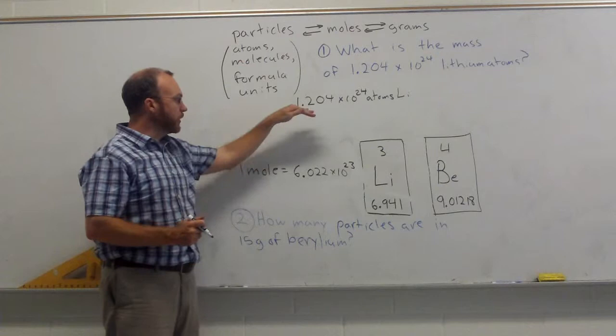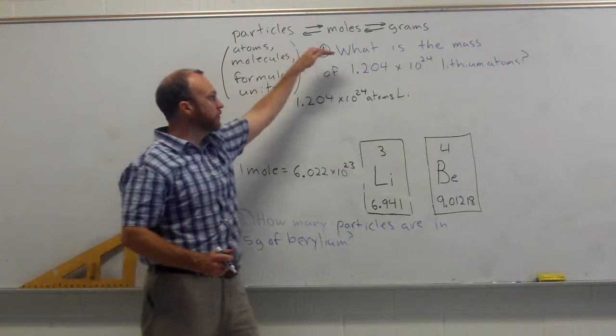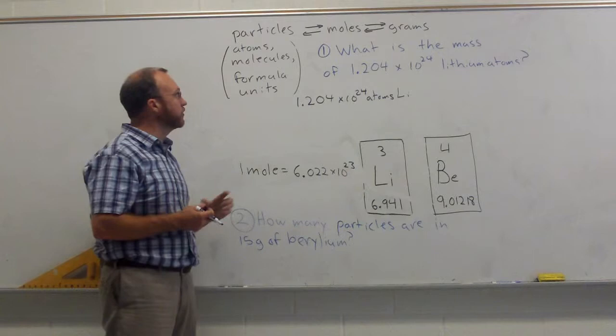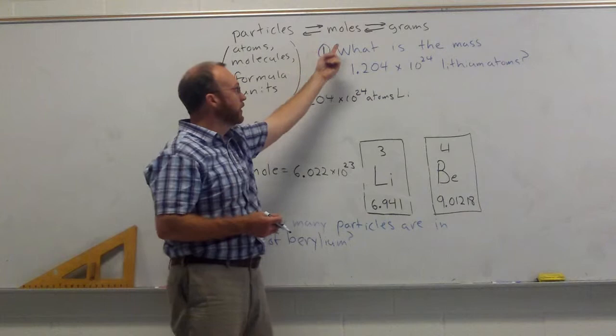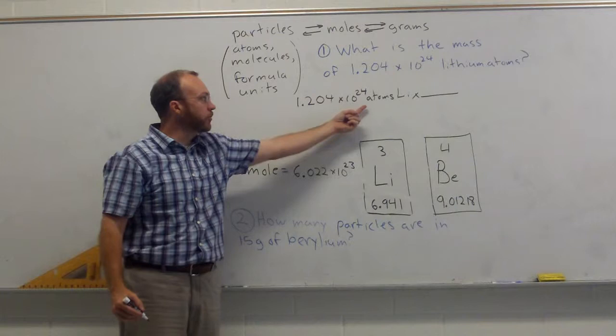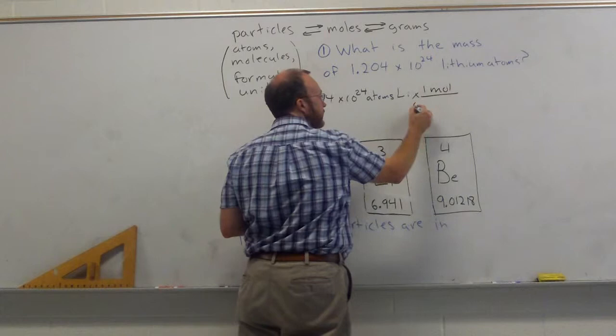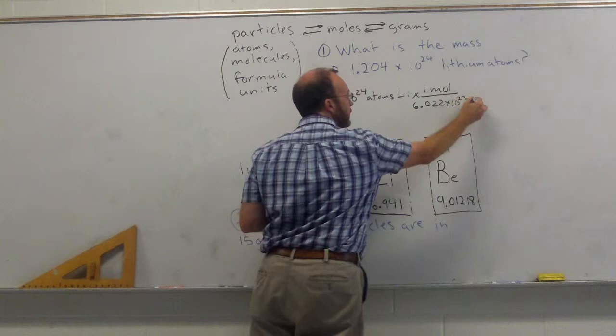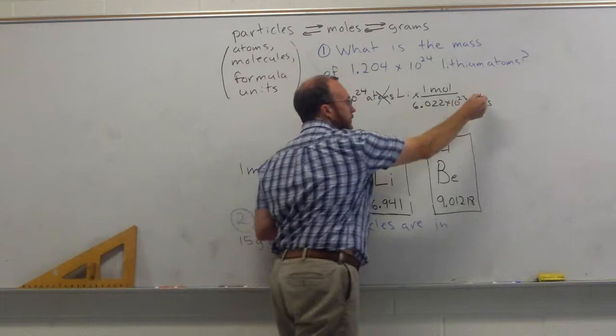Well, we know that we can relate atoms to moles by using Avogadro's number. Then we can switch from moles to grams using the molar mass. So what we're going to do is we're going to do this in two steps, and you can see it from the diagram. We're going to go from particles, atoms, to moles, and then from moles to grams. So we'll do that following our unit analysis method. So in the first step, we're going to get rid of atoms, and we're going to switch to moles. And we know that one mole is 6.022 times 10 to the 23rd atoms.